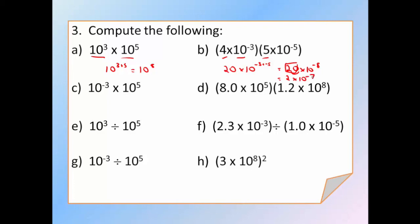Look at c. 10 to the minus 3 times 10 to the 5. Add the exponents together, and you should get 10 squared. Look at d. We have 8 times 10 to the 5 times 1.2 times 10 to the 8. Again, multiply the front numbers. 8 times 1.2 is 9.6 times, we have 10 to the 5 times 10 to the 8. That's 5 plus 8, so 13. Those are all the multiplication rules.